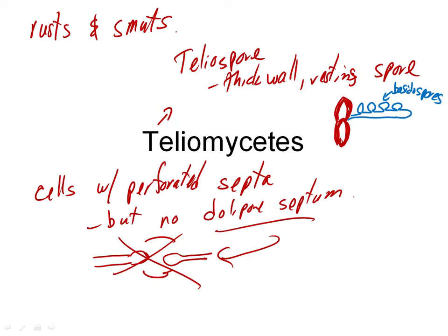Four basidiospores growing out of it — and that's the telio-basidium. So that's characteristic of this group, the Telomycetes: the teliospore and the telio-basidium.